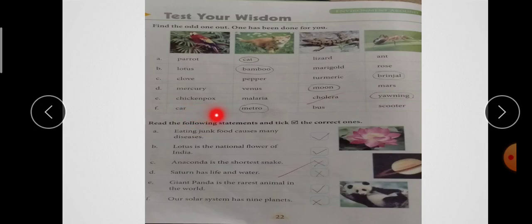F है - Car, Metro, Bus, Scooter. ये तीनों vehicles के name हैं. और Metro जो है, ये क्या है? Train. Second है, read the following statements and tick the correct ones. जो statements दी हैं, इनको read करना है. और जो answer है, वो आपने tick लगा के लिखना है.